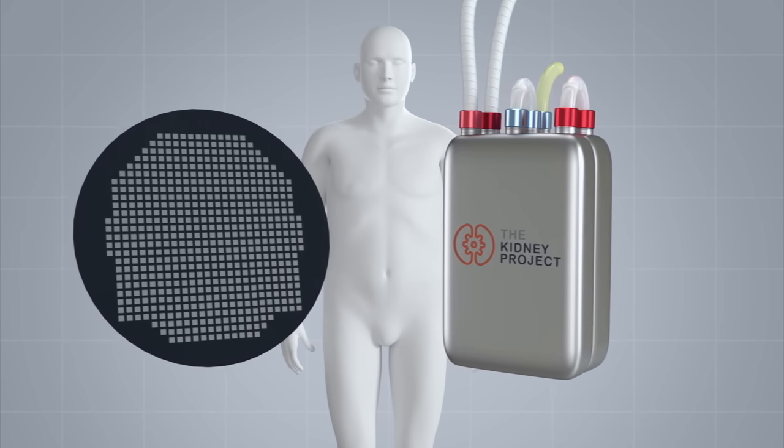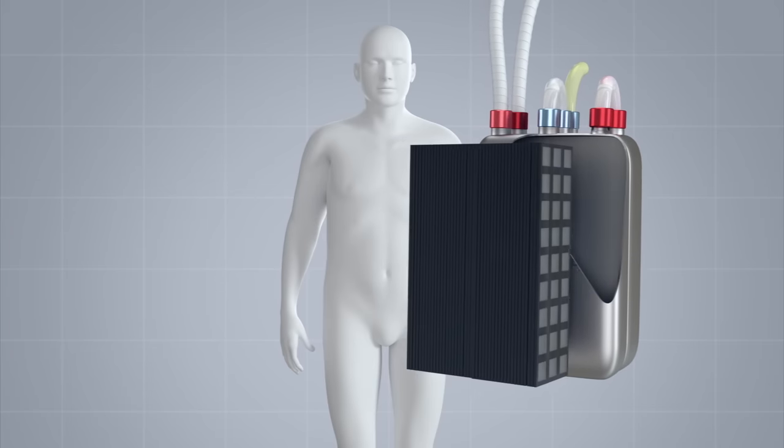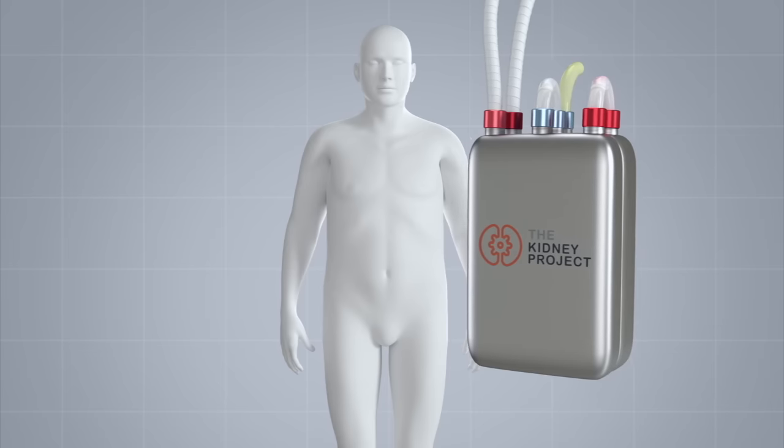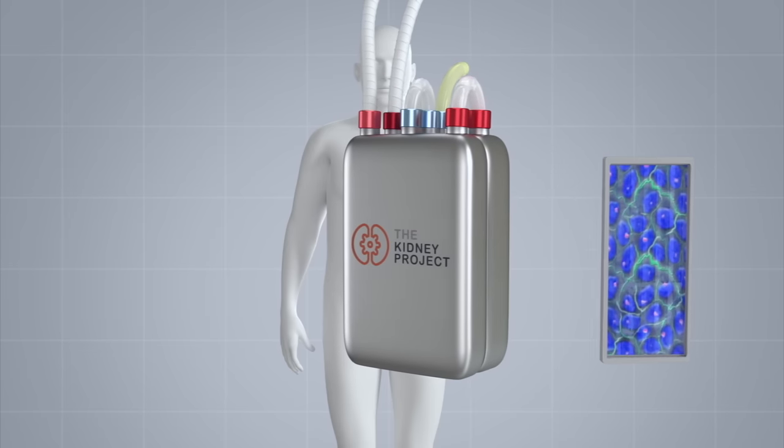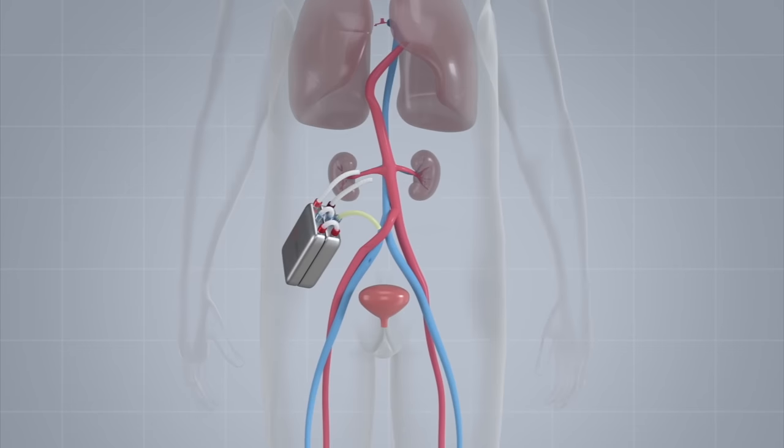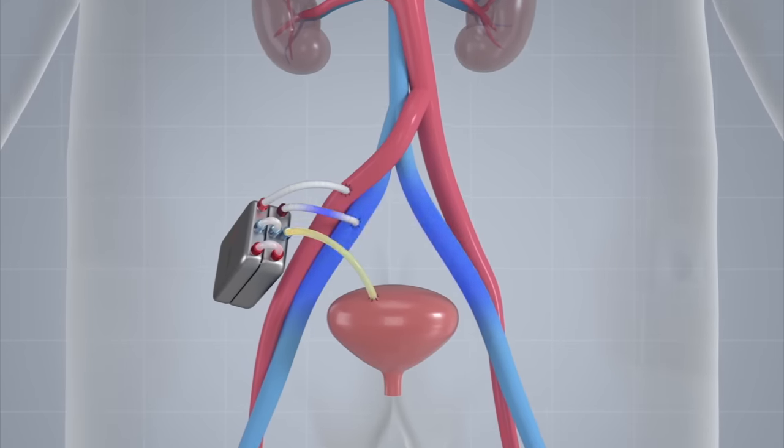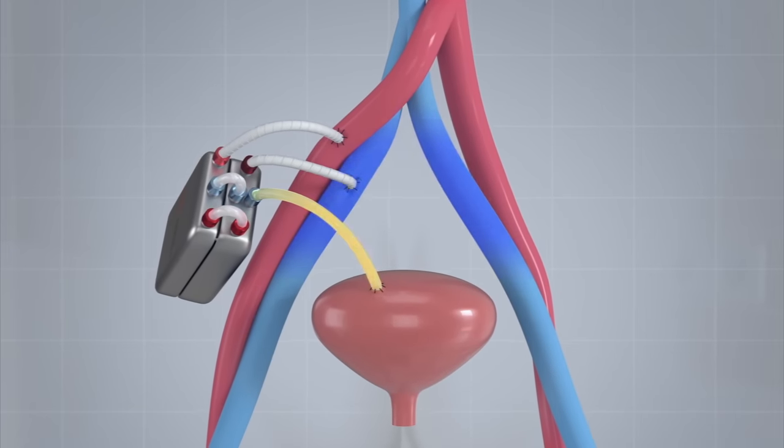Highly efficient membranes constructed from semiconductor silicon wafers enable filtration without requiring pumps or electrical power while protecting the renal cells from rejection by the patient's immune system. The biocompatible device attaches to the circulatory system and removes toxins to the bladder as waste.